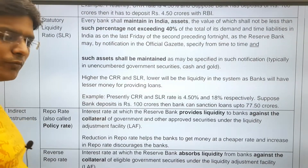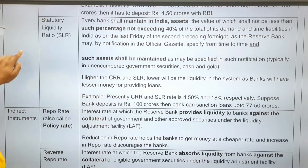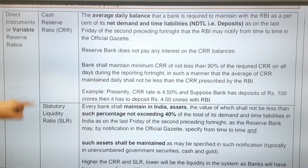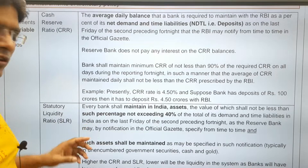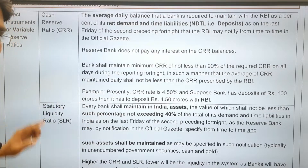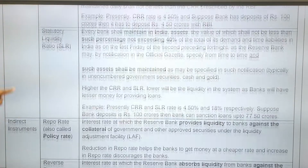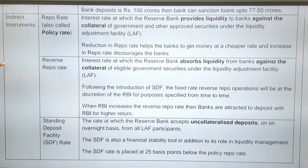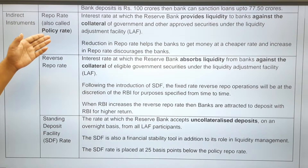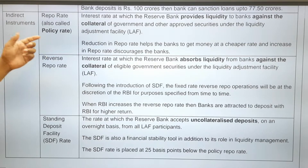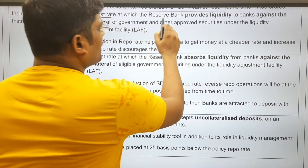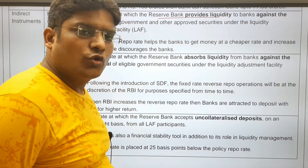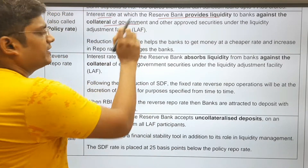CRR and SLR are direct instruments of monetary policy through which RBI can directly control money supply. The indirect instruments include repo rate, also called the policy rate. Repo rate is the interest rate at which RBI provides liquidity to banks against collateral of government securities.